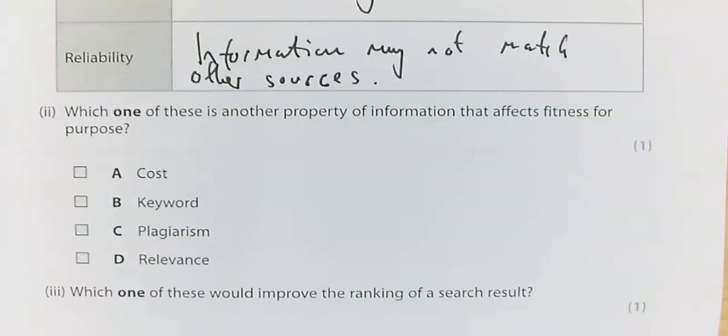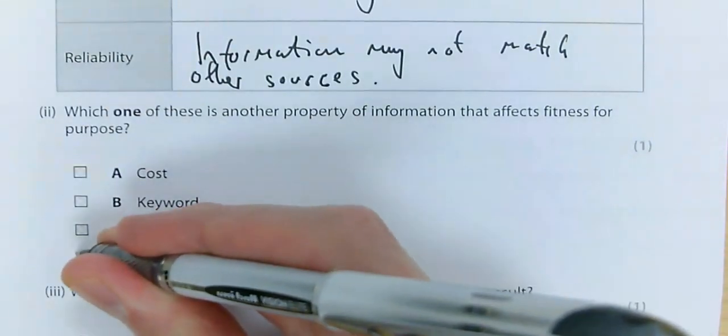For A2, which one of these is another property of information that affects fitness for purpose? The only correct answer here is D, relevance.